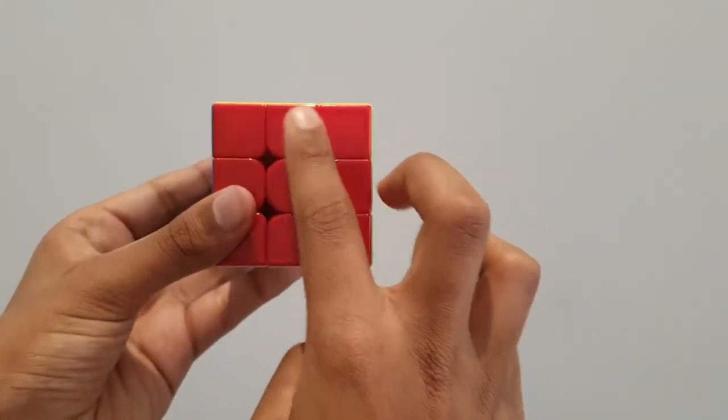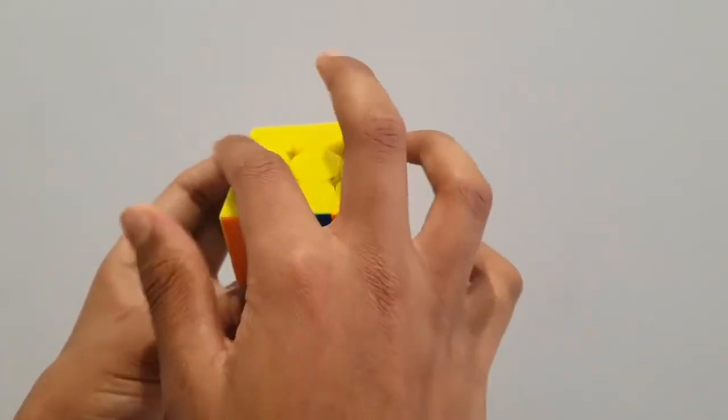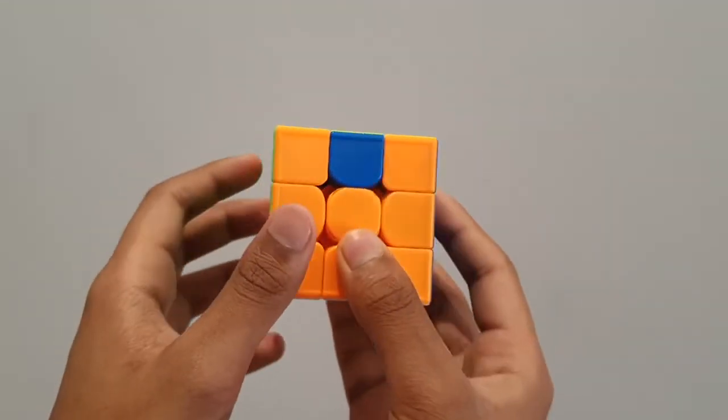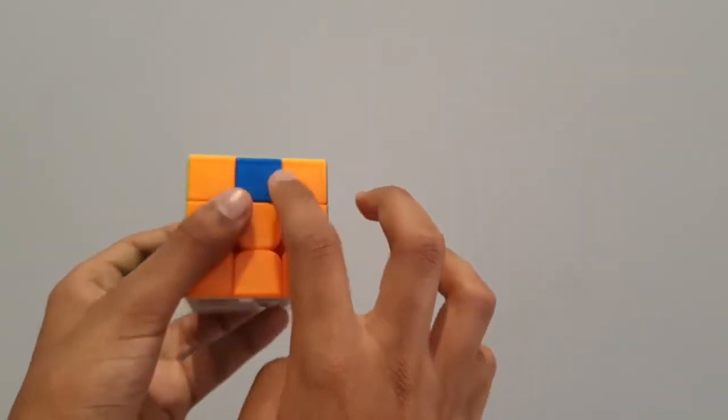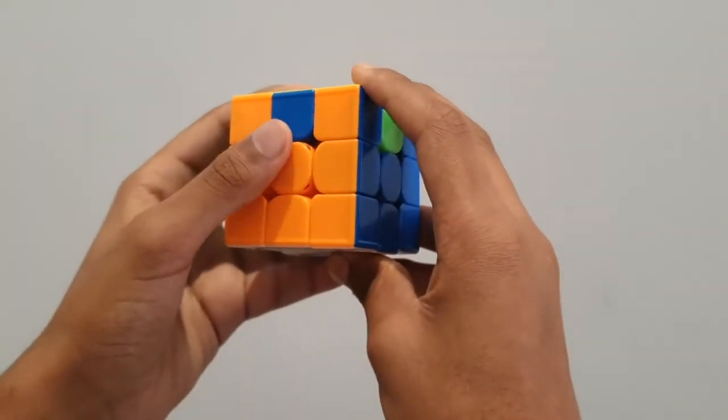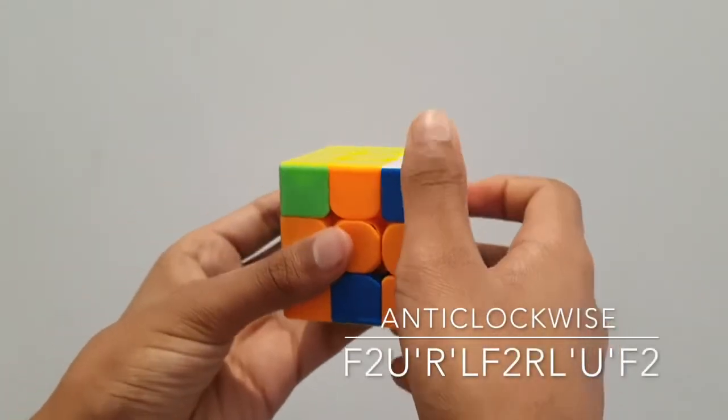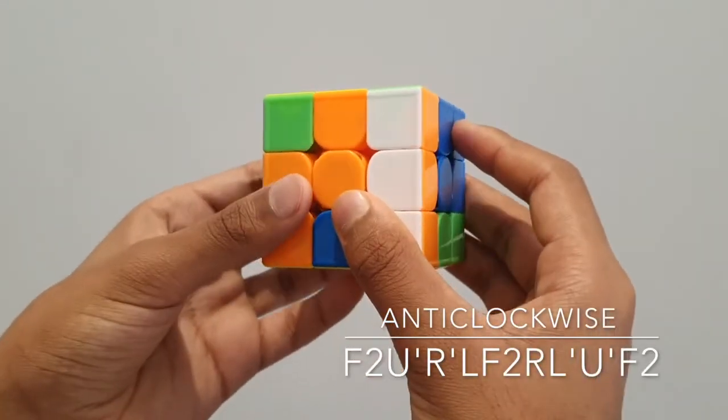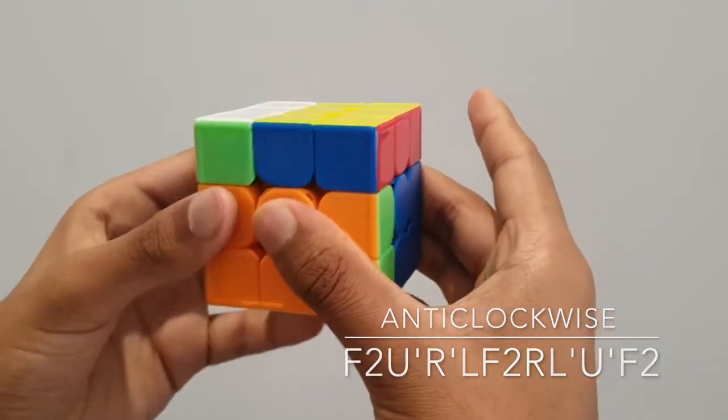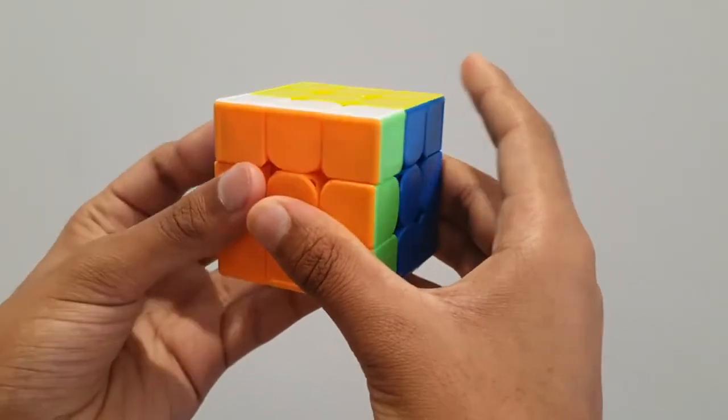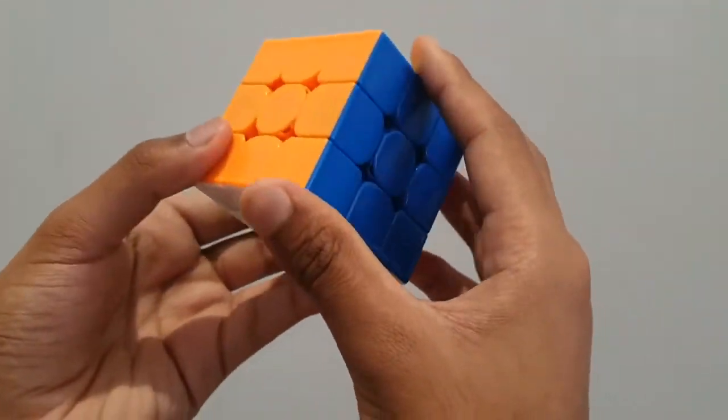Now, you can see we have one solved face. We can put this at the back of the cube. We then examine the cube and look at the edge pieces. We look if it's clockwise or anti-clockwise. So it's anti-clockwise. So this is how we do it. Once more, we do our anti-clockwise algorithm: F2, U prime, R prime, L, F2, R, L prime, U prime, F2. And that is how we solve the 3x3 Rubik's cube.